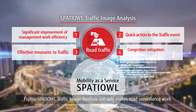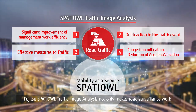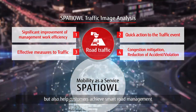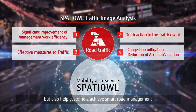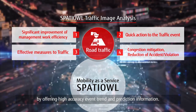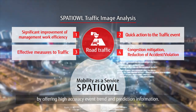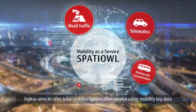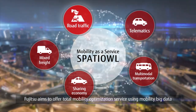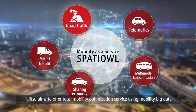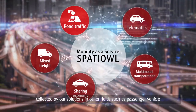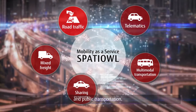Fujitsu's Spatial Traffic Image Analysis not only makes road surveillance work significantly efficient, but also helps customers achieve smart road management by offering high-accuracy event trend and prediction information. Fujitsu aims to offer a total mobility optimization service using mobility big data collected by our solutions in other fields, such as passenger vehicles and public transportation.